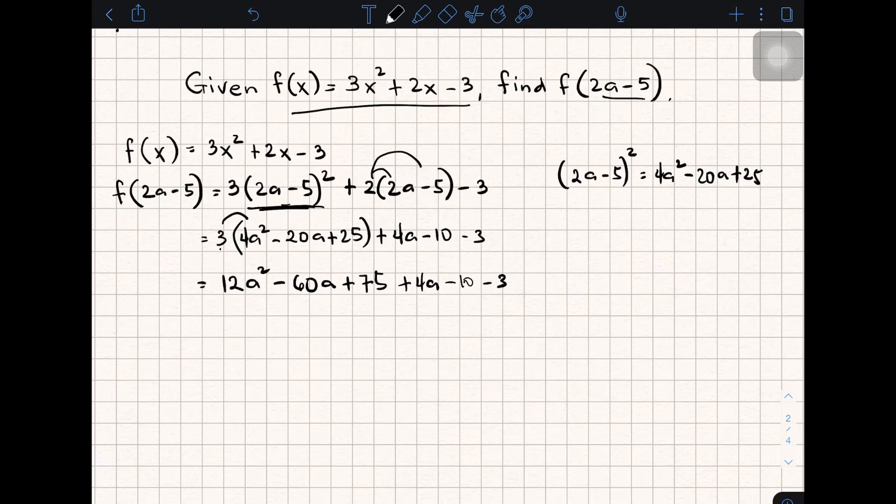Now this time, you will get the final answer by combining like terms. So we have f(2a - 5) = 12a². Then we have here -60 plus 4a, that is -56a. Then we have 75 minus 10, that is 65, minus 3, plus 62.